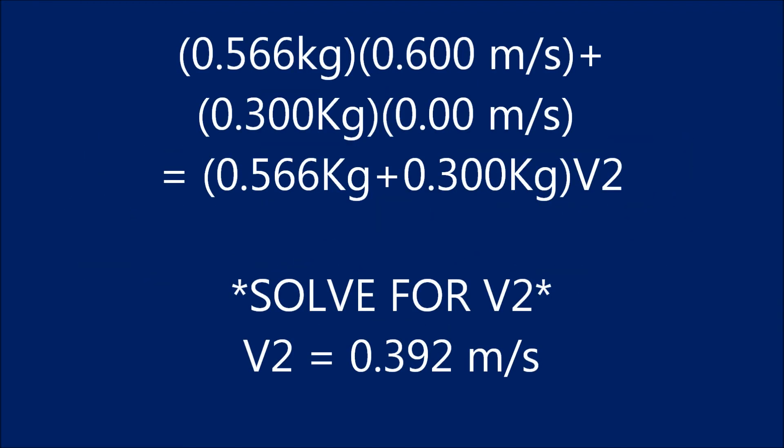Once plugging in all the information we know into the inelastic equation, we can then solve for the velocity of both the cars combined, which is also known as V2. This turns out to equal 0.392 meters per second.